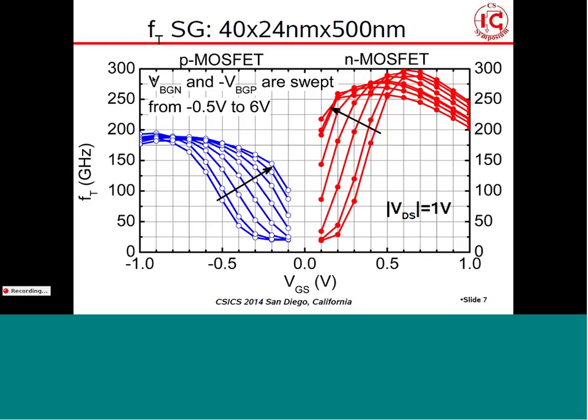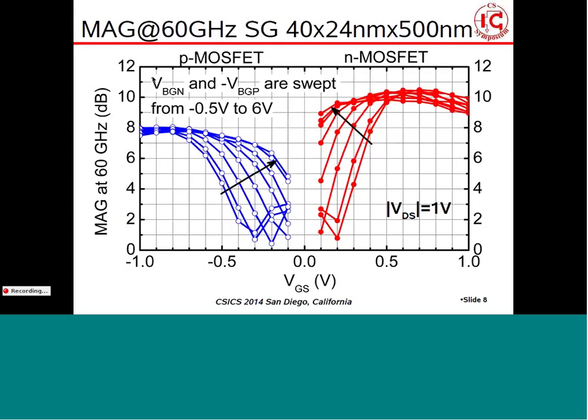We get a cutoff frequency of around 300 GHz for the NMOSFET and about 195 GHz for the PMOSFET. The maximum allowed voltage in this technology is one volt. The next slide shows the measured maximum available gain at 60 GHz for the same devices — you get a maximum available gain of about 10.5 dB for the NMOS single gate contact device, and around 8 dB for the PMOS.